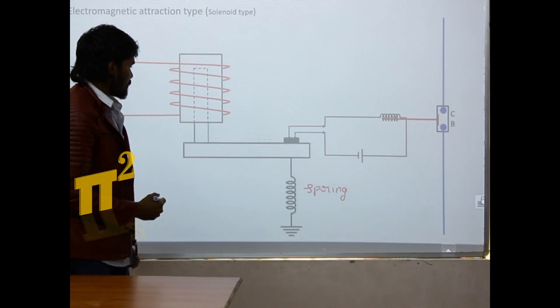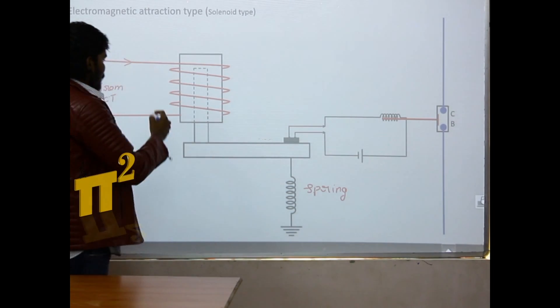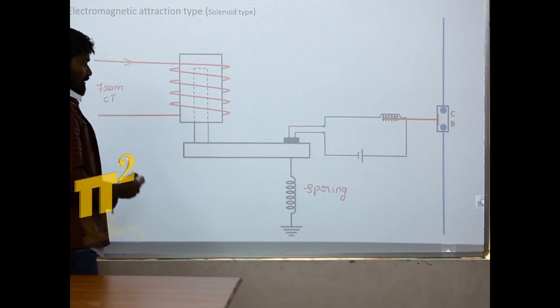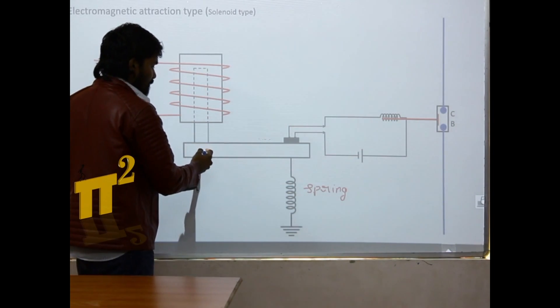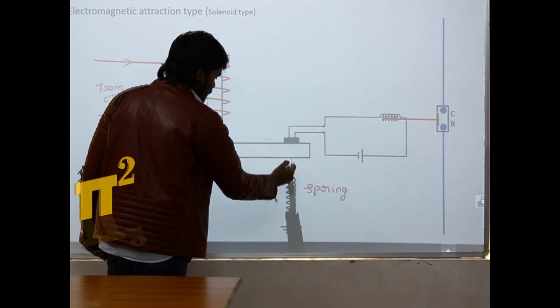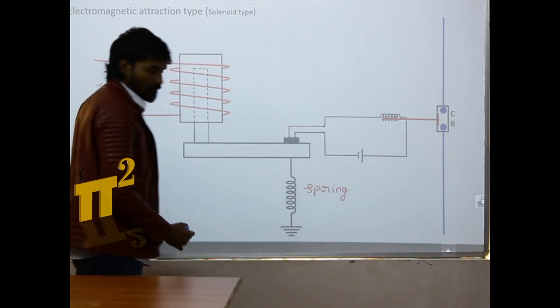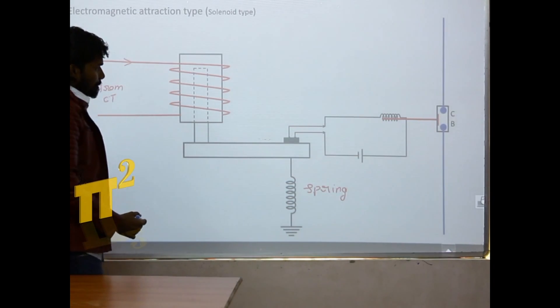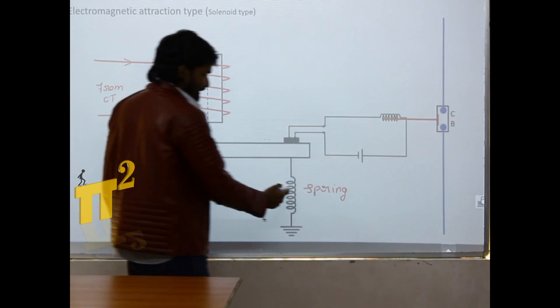That means when there is no high current, it has to come back to the horizontal position. So this spring will pull it back to the horizontal position. So spring is to provide the restraint torque.